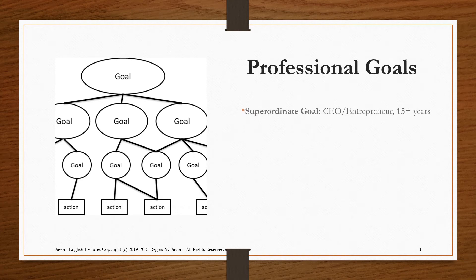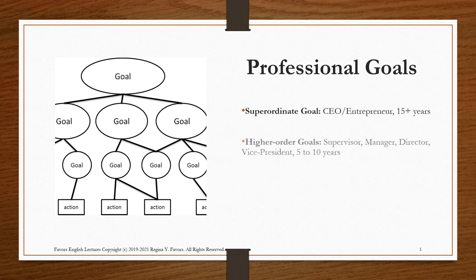Let's look at professional goals. The superordinate goal is to become a CEO or entrepreneur at 15 plus years. The higher-order goal will be supervisor, manager, director, or vice president at 5 to 10 years.